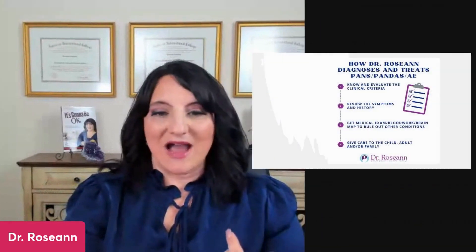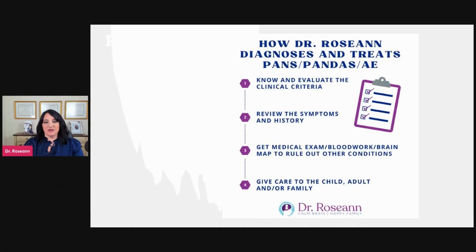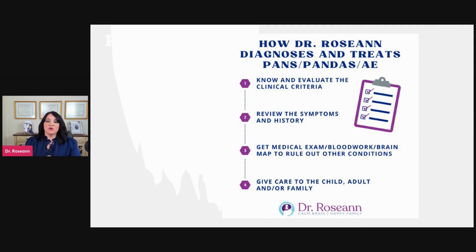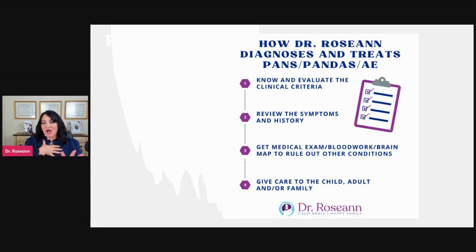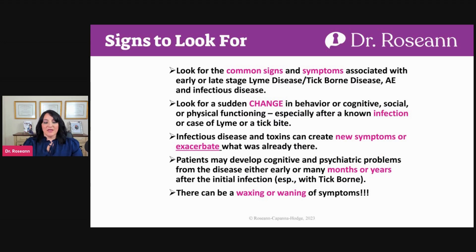So let's talk about how it's actually diagnosed so you get a better understanding. This is how I help people diagnose and treat PANS and PANDAS and get people to the right medical provider. You have to know the clinical criteria and evaluate it. You have to actually know what the clinical criteria is and rule it out or rule it in. Then you have to review the symptoms and the history. We're able to do brain maps, blood work to help rule out other conditions, and then give care — that's what our Brain Behavior Reset Program is all about.